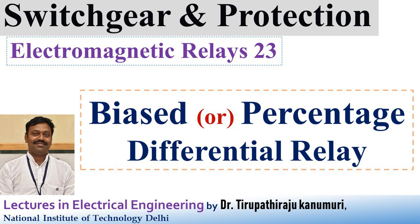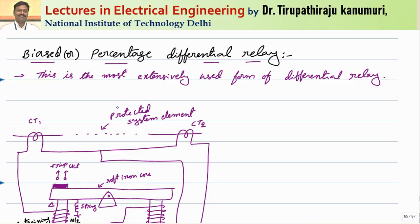Today we are going to discuss the biased or percentage differential relay. In the last class, we saw the basic differential relay. The basic disadvantage is that it will trip due to imbalances in CT secondary ratios caused by constructional differences — both CTs saturate at different fault current levels, causing unequal secondary currents even for external faults, making the relay operate incorrectly. The better option is the biased or percentage differential relay.